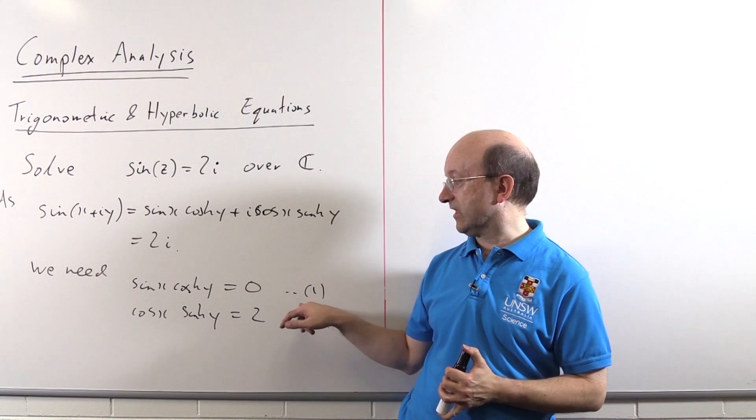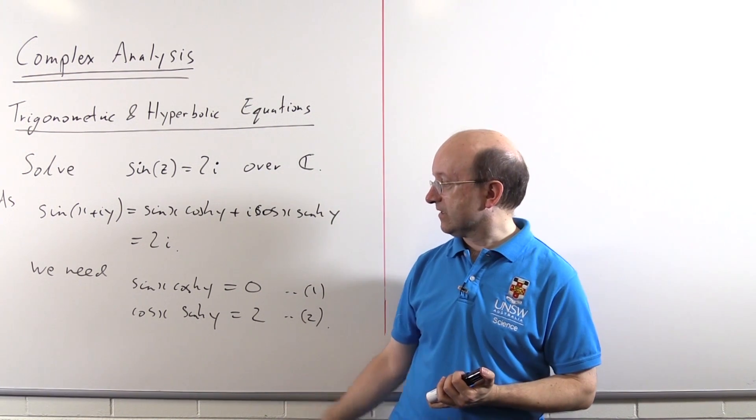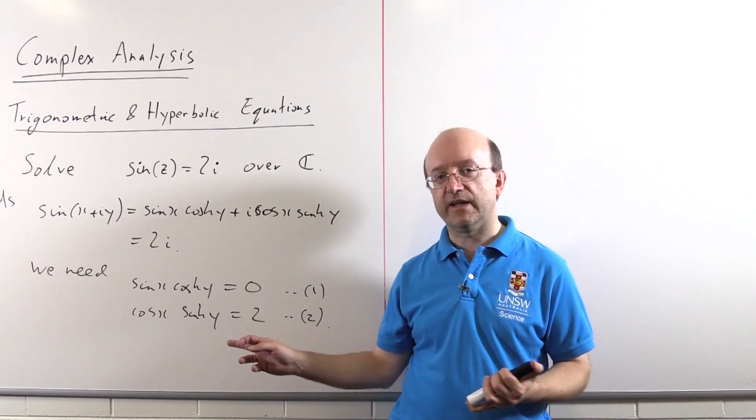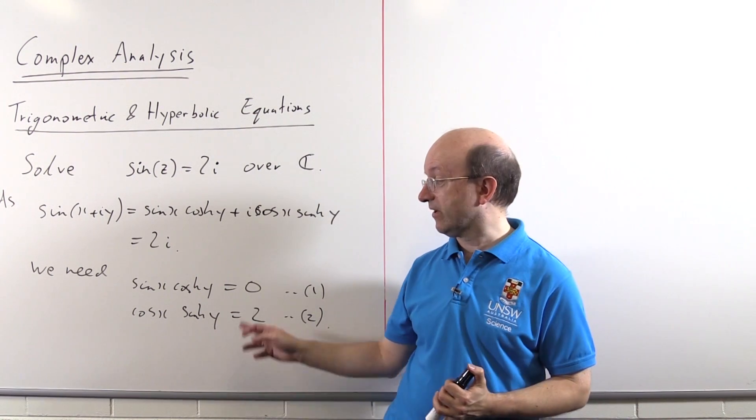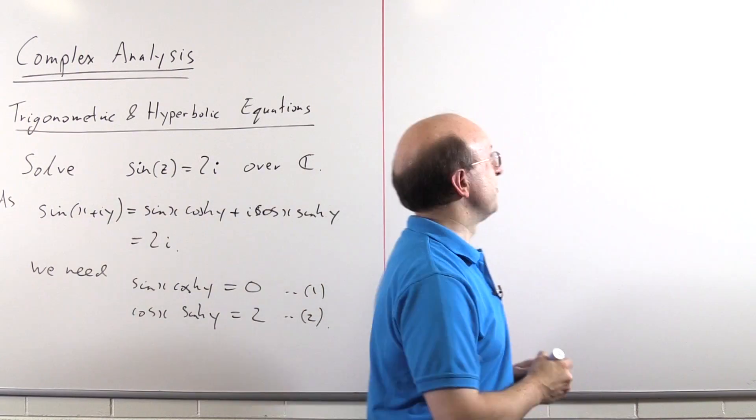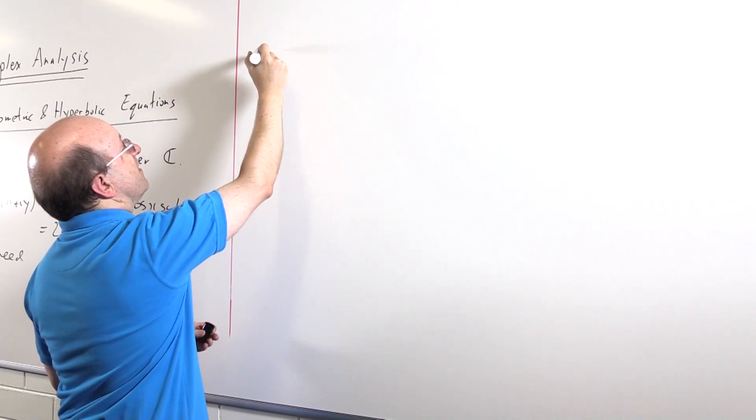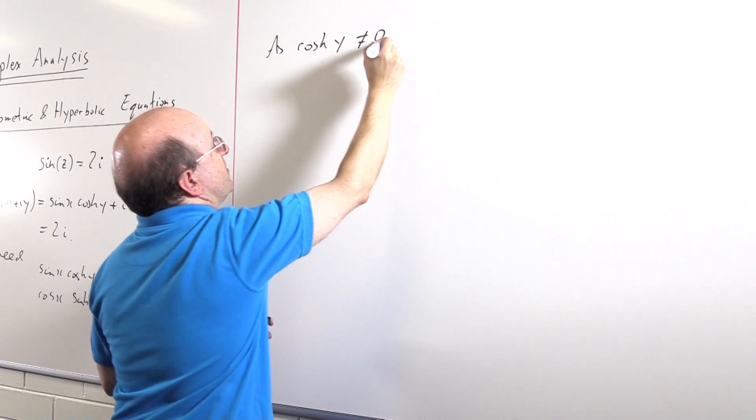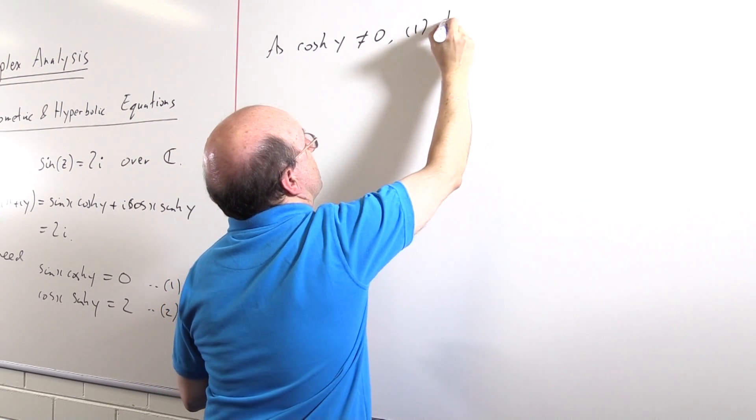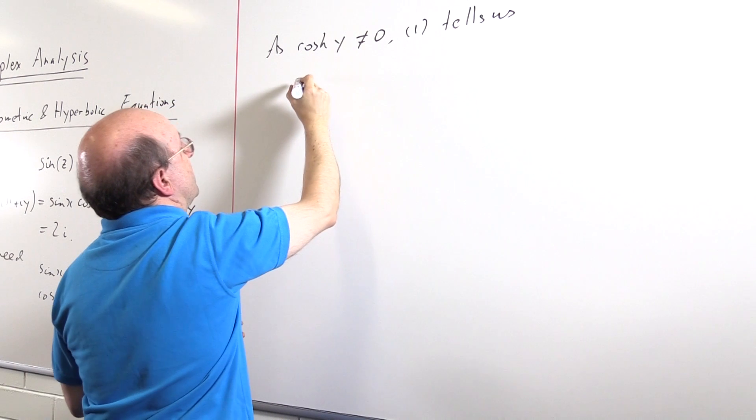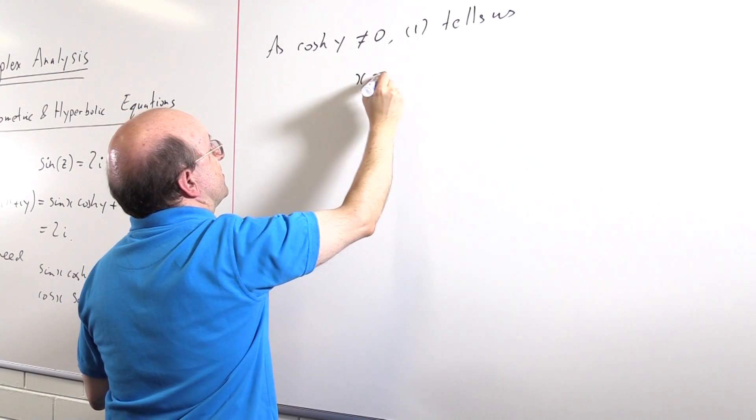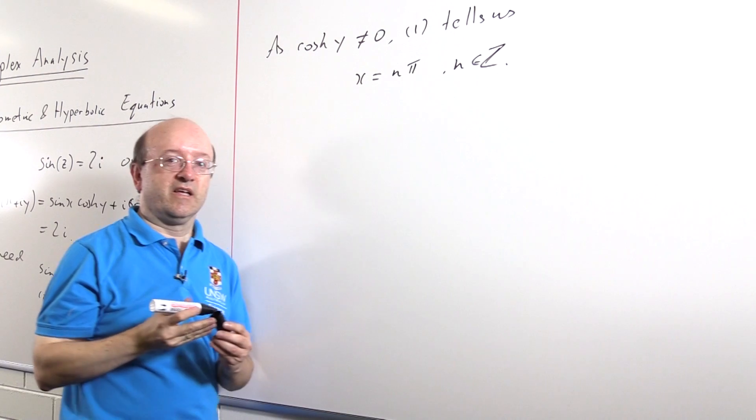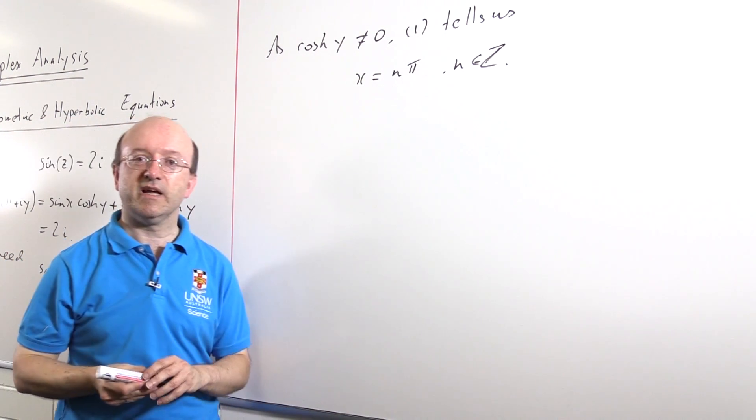So given these two equations, we start with looking at equation 1 because we've got something equal to 0. Sine x cosh y equals 0, so either sine x or cosh y is 0. Well, x and y are both real, and cosh of a real number is never 0. So this first equation tells me that sine must be 0. As cosh y is not 0, equation 1 tells us sine of x is 0, and sine is 0 when x is a multiple of pi. So we know that x is n times pi.